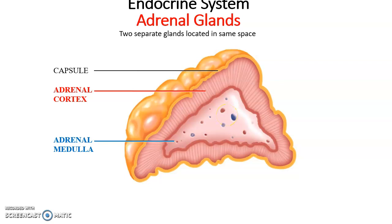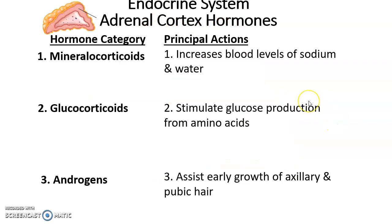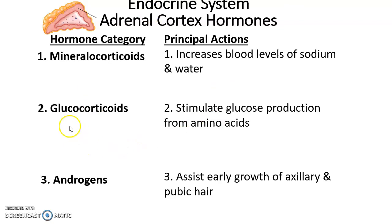Two glands, same area — like two people in one apartment. The adrenal cortex produces many different hormones, broken into three categories. First are the mineralocorticoids — hormones that affect the level of electrolytes in the blood. For instance, some will increase blood levels of sodium and, as a consequence, also increase water levels. If sodium levels are low, they cause the kidneys to conserve sodium and pull it back into the bloodstream, thereby conserving water.